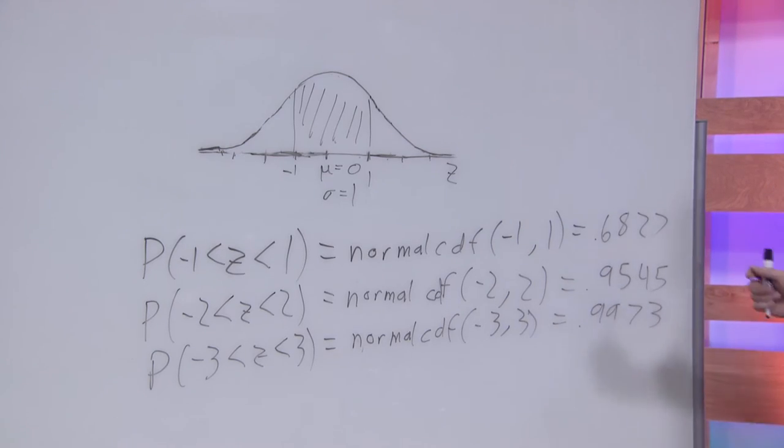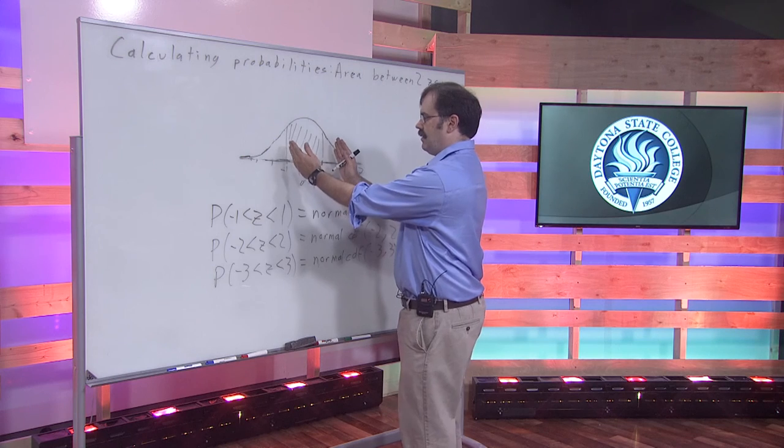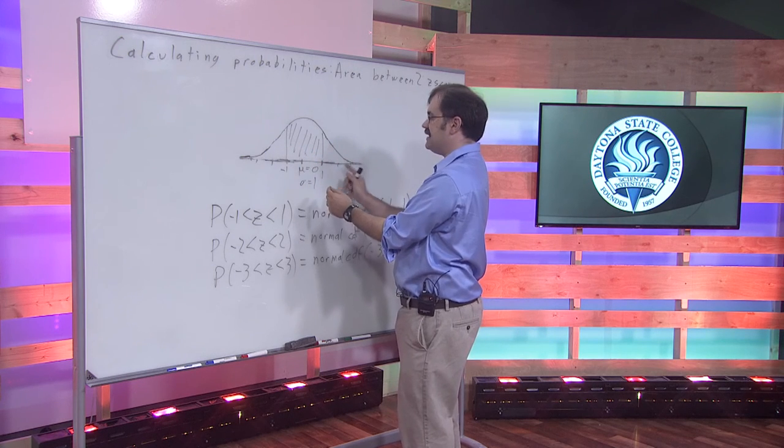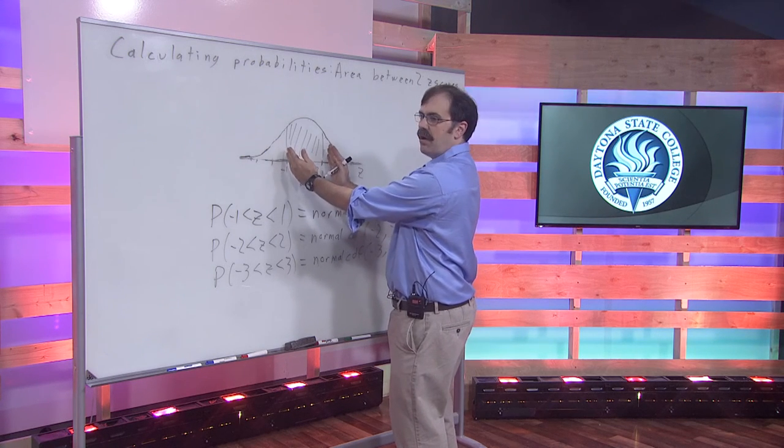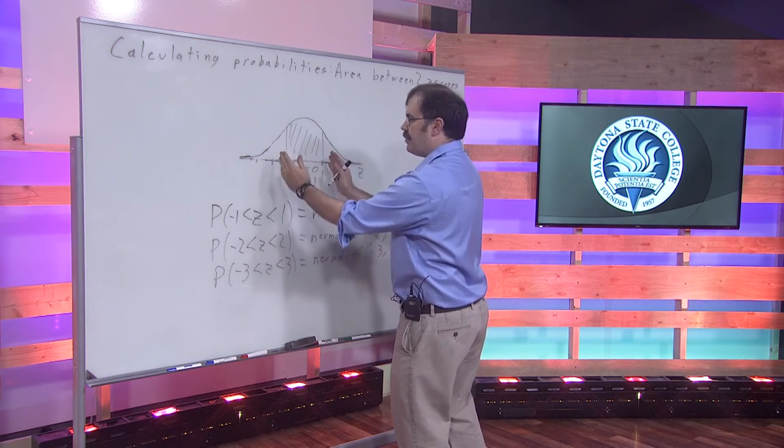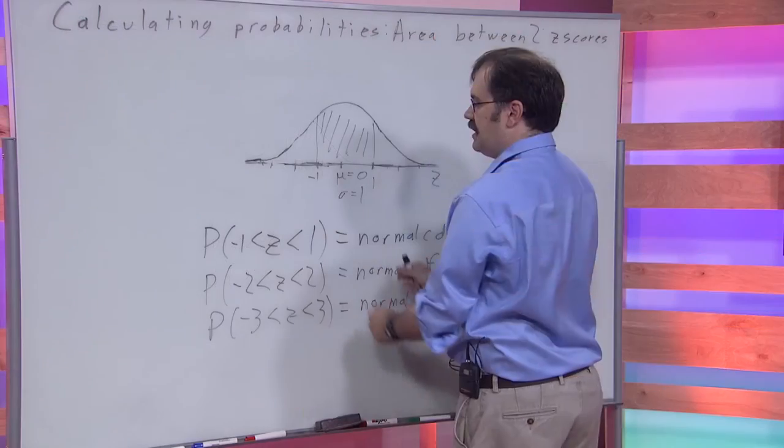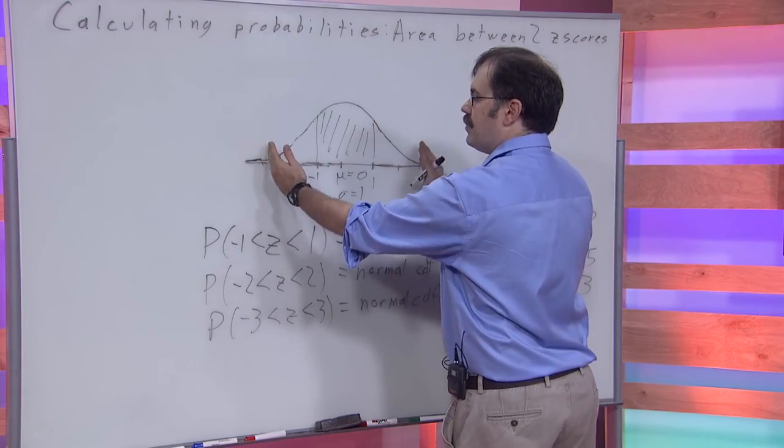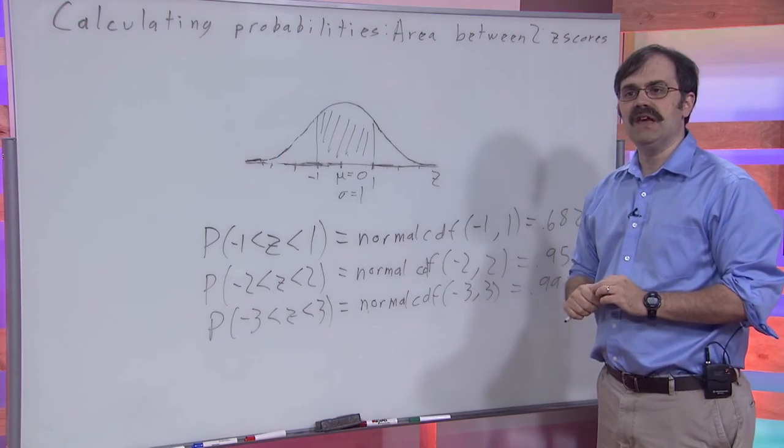And if you look at these numbers, what you're really talking about, since these are z-scores: What's the probability that you are within one standard deviation of the mean? Two standard deviations? Three standard deviations of the mean?